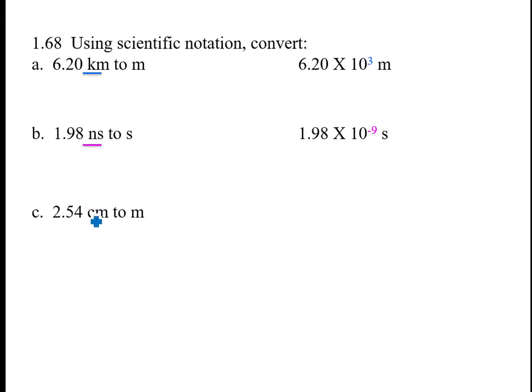Centi to meters. Centi is what multiplier? Minus two. So this becomes 2.54 times 10 to the minus two meters. The last one is micro. Micro is minus six, so this becomes 5.23 times 10 to the minus sixth grams.